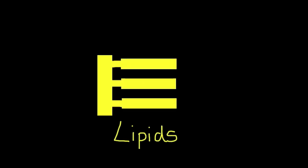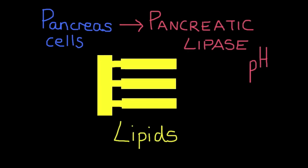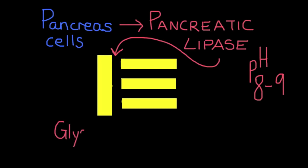Finally, in order to break down the substrate lipids, the pancreas cells are the source of pancreatic lipase. This enzyme works best at the optimum pH of 8 to 9 and will break down lipids into the component parts, or the products, glycerol and fatty acids.